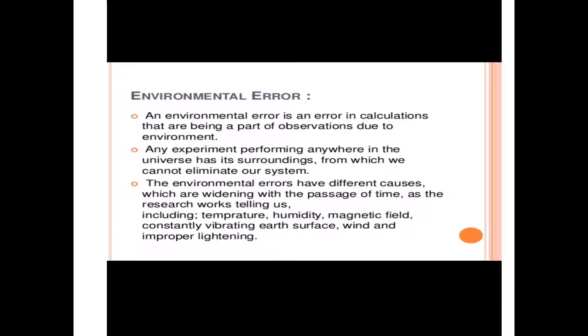Next is environmental error. In environmental errors, variation in atmospheric temperature is a major factor. Errors occur in measurement due to expansion or contraction of either the component being measured or the measuring instrument.